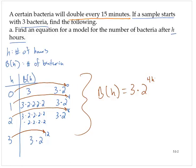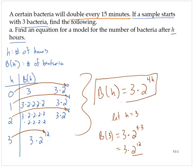Now check your work. If we let h equal three, then b of three would be three times two to the four times three, so that would be three times two to the twelfth. I'm pretty confident that b of h would be three times two to the 4h.